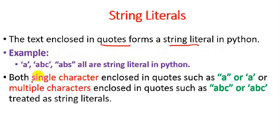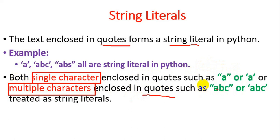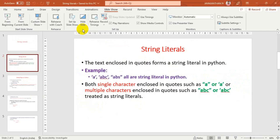Both single characters enclosed in quotes — such as 'a', 'x', 'y', any special symbol, or any numeric enclosed within double or single quotation marks — are treated as a string. Multiple characters enclosed within quotes, such as 'abc' in double or single quotation marks, are also treated as string literals in Python.